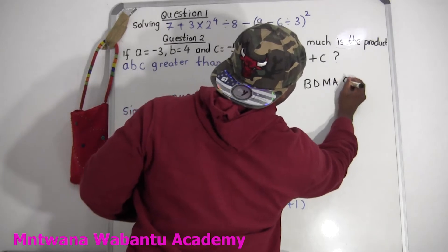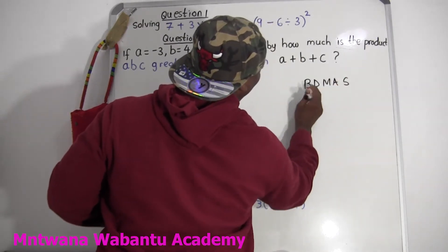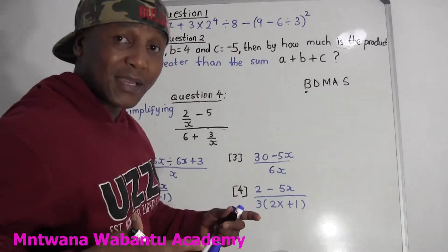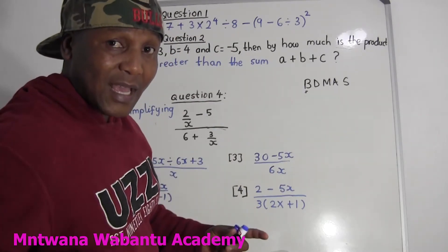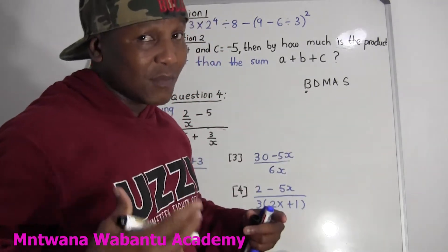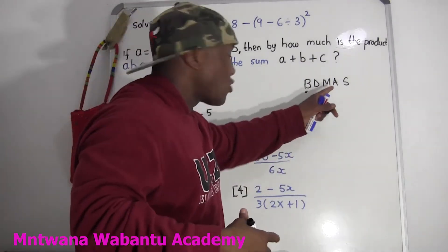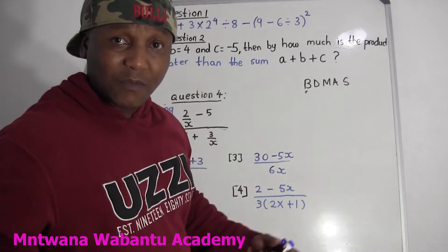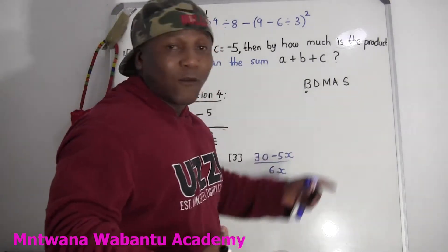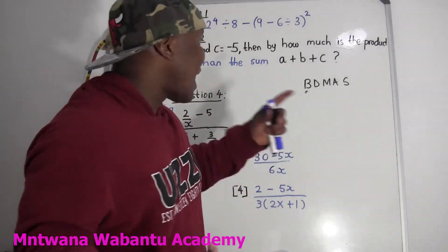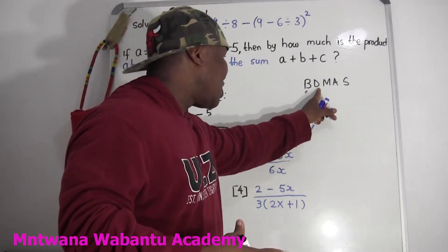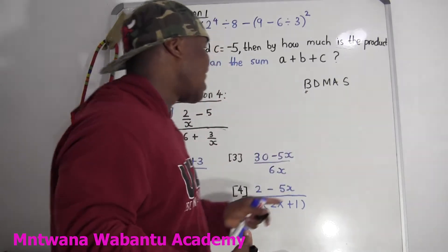BODMAS. So what you do: you look at the bracket. If you have a bracket, make sure you simplify that bracket and get done with it. Then you go for division — simplify it, get done with it. After that, you go for multiplication. Simplify the multiplication and get done with it. Then you go for addition and then subtraction. So this is: Bracket, Division, Multiplication, Addition, Subtraction.